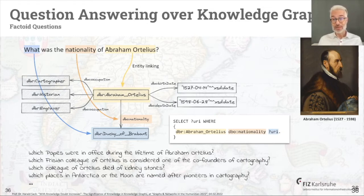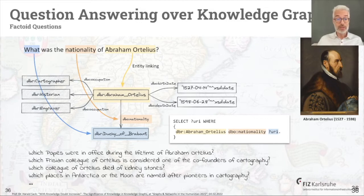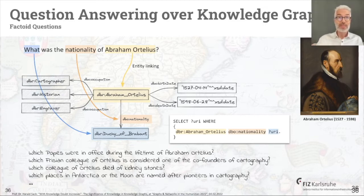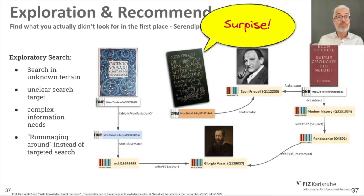For example, you can map a natural language query into a SPARQL query — a query language using triple patterns — and generate the answer from a knowledge graph. This makes it easy to answer factoid questions, like asking about the nationality of Abraham Ortelius, a famous Dutch cartographer from the Dutch Golden Age. You can find out which popes were in office during his lifetime, who his colleagues from Frisia were, who the co-founders of cartography were, and which colleague of Ortelius died of kidney stones — all using knowledge graphs like DBpedia or Wikidata.